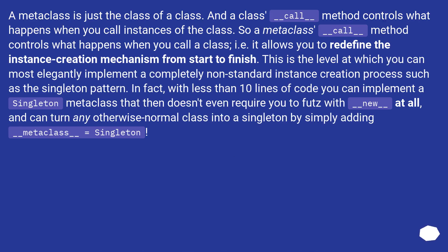A metaclass is just the class of a class, and a class's __call__ method controls what happens when you call instances of the class. So a metaclass's __call__ method controls what happens when you call a class — i.e., it allows you to redefine the instance creation mechanism from start to finish. This is the level at which you can most elegantly implement a completely non-standard instance creation process such as the singleton pattern. In fact, with less than 10 lines of code you can implement a singleton metaclass that doesn't even require you to fiddle with __new__ at all, and can turn any otherwise normal class into a singleton by simply adding __metaclass__ = Singleton.